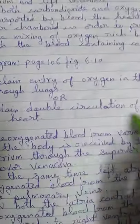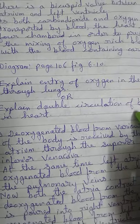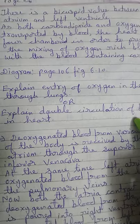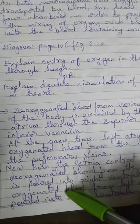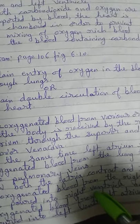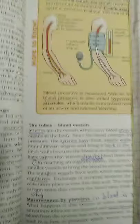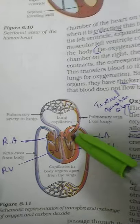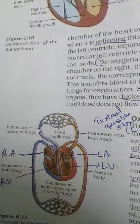This is called double circulation — because the blood enters the right side of the heart, from the right side it goes to the lungs, and from the lungs it again enters the left side of the heart. The answer has been written as explained, and the PDF of the answer has been sent to you. Draw the diagram on page 106, figure 6.11, which shows the double circulation of the blood. That's all for today's lecture; we will meet in the next video.